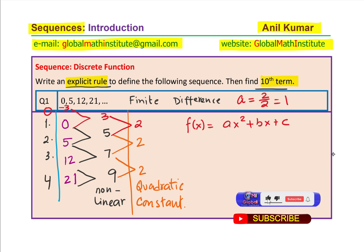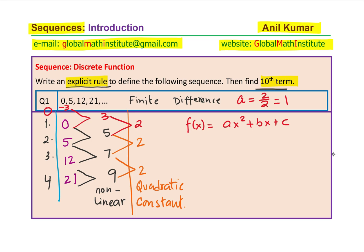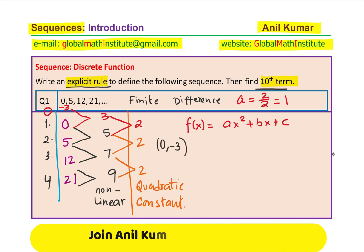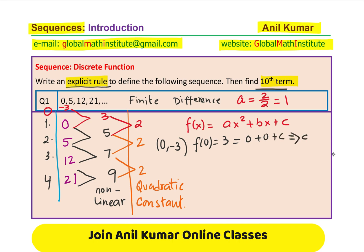We get 3 by reverse calculation: 0 minus what gives 3? That must be minus 3, since 0 minus (−3) equals 3. So from the reverse calculation, we identify a new point: when term number is 0, the value is −3. If I substitute 0 for x, I get f(0), which we know is −3. That gives 0 + 0 + c = −3, so c equals −3.